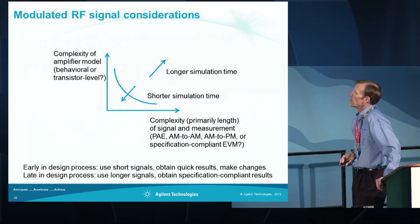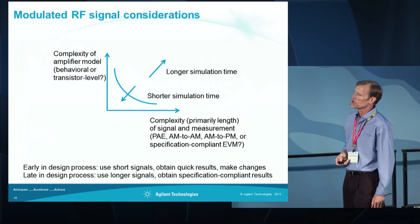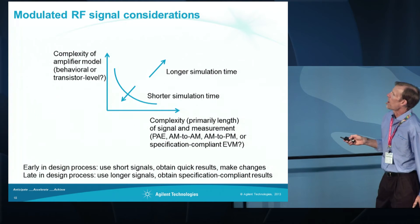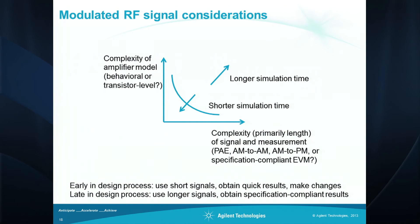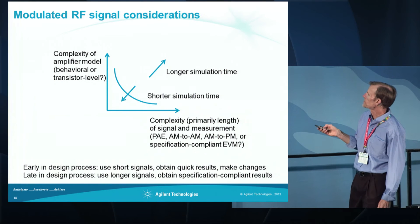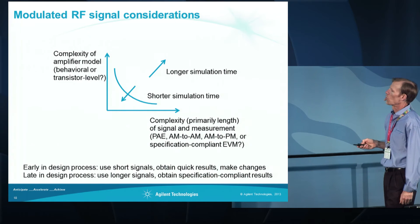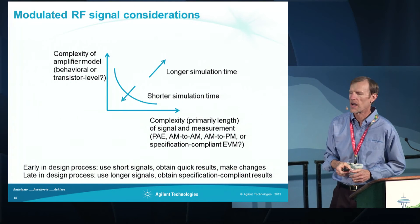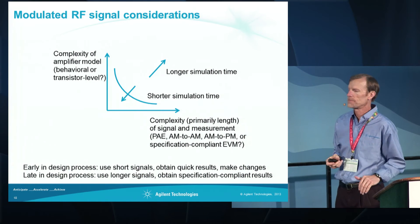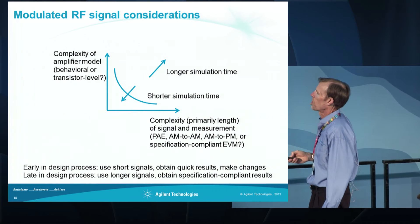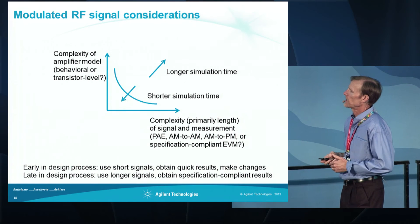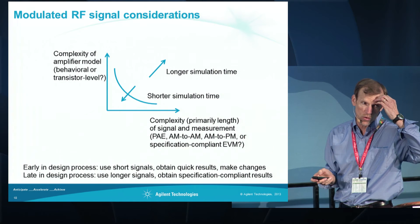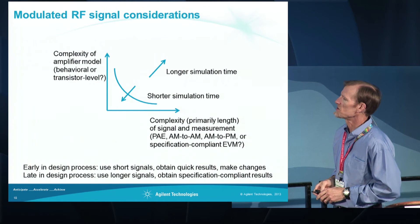I'd like to talk about some considerations for simulation time and the type of test signals to use. If you have a complex amplifier model and a long modulated signal, simulation times could be quite long. Early in the design process, it's better to use short signals to obtain quick results so you can make modifications to your design. Then later, with a more complete design, use longer simulations to get specification-compliant results. We can get power added efficiency, AM-to-AM distortion, AM-to-PM distortion, and ACPR data from fairly simple and short signals.